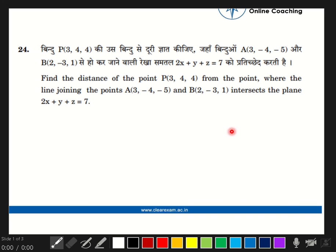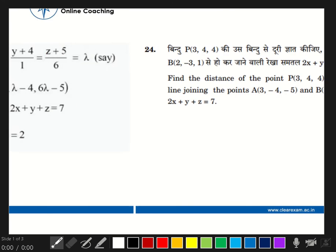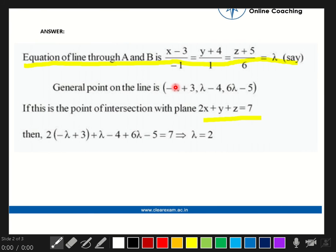Now come to the solution part. First we have to make the equation of line through A and B. This is the method: (x - 3)/(-1) = (y + 4)/1 = (z + 5)/6. This is the equation and we have to put it equal to lambda, where lambda will be any variable.